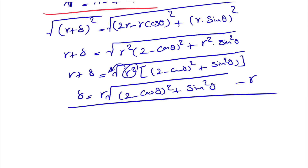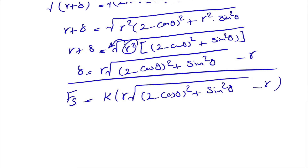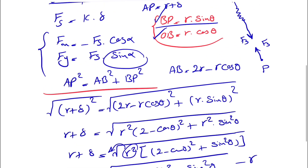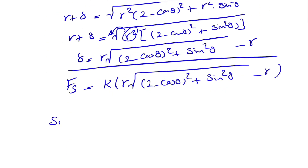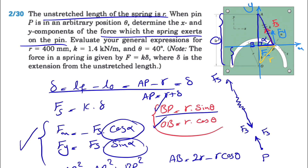Now that we have delta, it's easy to find fs, because fs = k·δ = k·[r·√((2 − cos(θ))² + sin²(θ)) − r]. For finding fx and fy we obviously need the angle, so we need the values of sine of alpha and cosine of alpha. Let's get back to the figure — now that we have fs, we have to figure out sin(α) and cos(α).